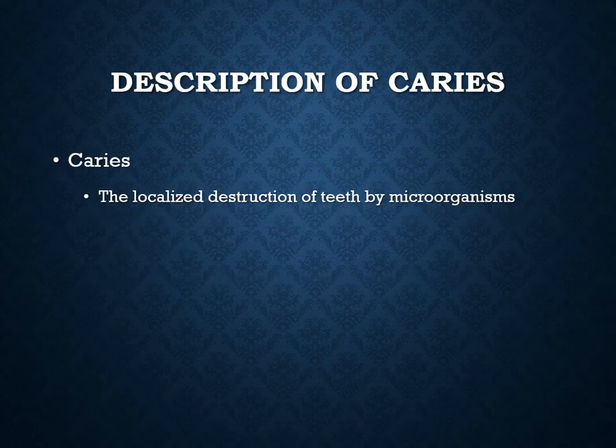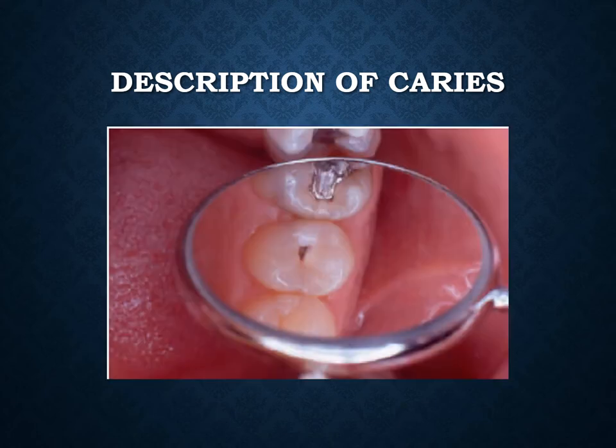The definition of caries is the localized destruction of teeth by microorganisms, also called a cavity. The word caries comes from the Latin word cariosis, meaning rotting — it literally means the rotting of the teeth. A carious lesion or area of tooth decay is also called a cavity. In dentistry, cavity refers to the cavitation or hole formed in the tooth by that microorganism assault. An occlusal cavity is a common type — you could stick an explorer down in there.